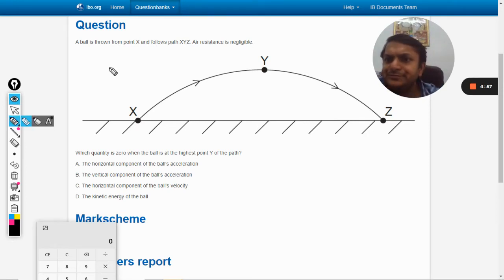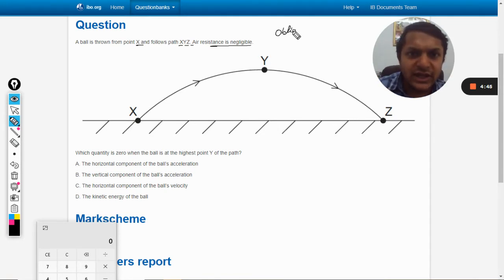Okay, in this question a ball is thrown from point x and follows the path x y z. Air resistance is negligible. It's a very simple question - it's a simple projectile motion. It is also given a unique name, this is known as oblique projectile.